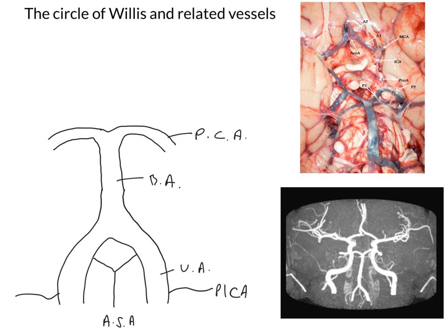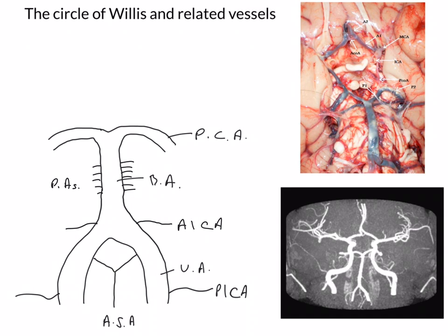We've mentioned the posterior inferior cerebellar artery — the PICA — and now we need to add the anterior inferior cerebellar artery, which usually comes off near where the two vertebrals coalesce. Here are the two anterior inferior cerebellar arteries. Branching off of the basilar artery, there are many small branches going into the pons — these are the pontine arteries.